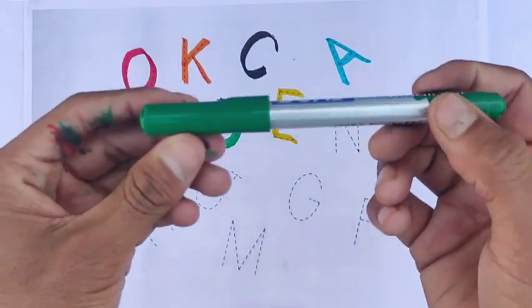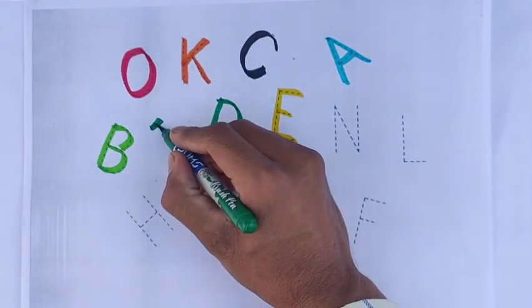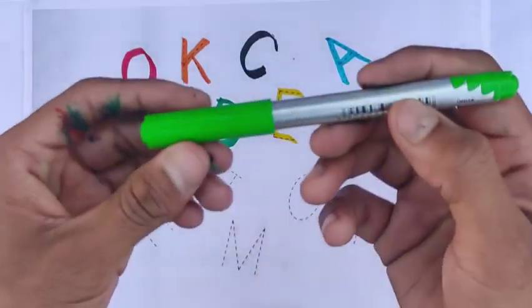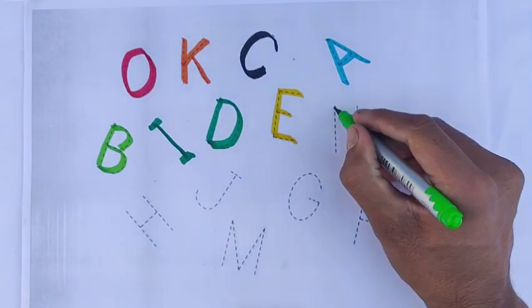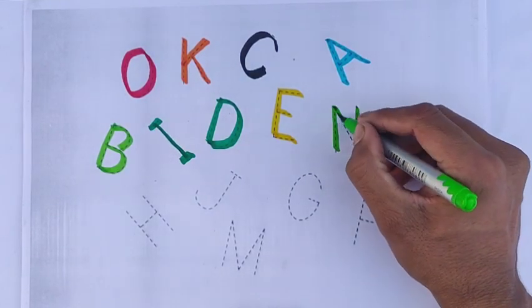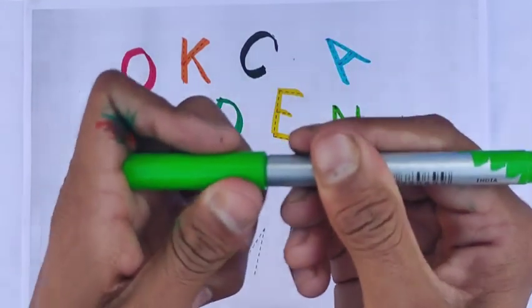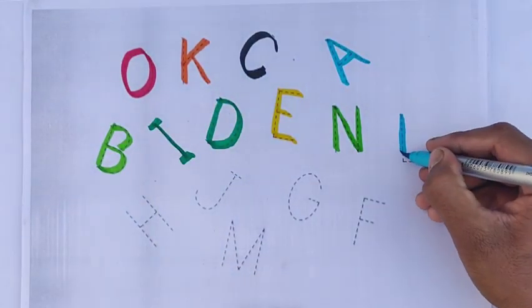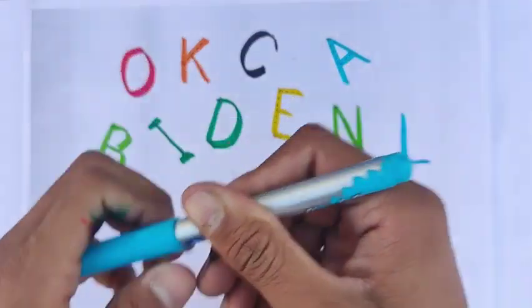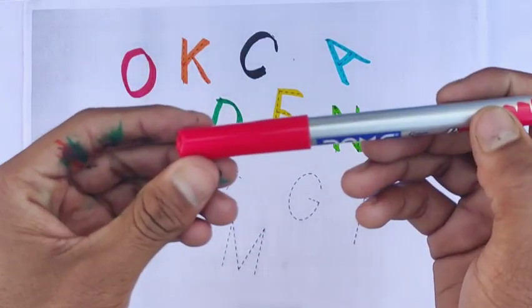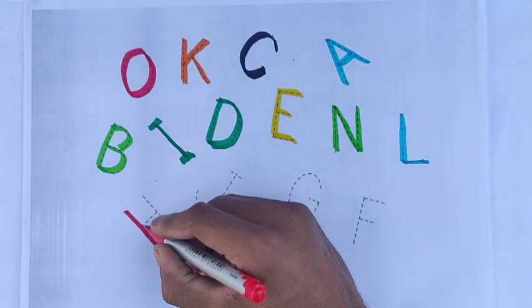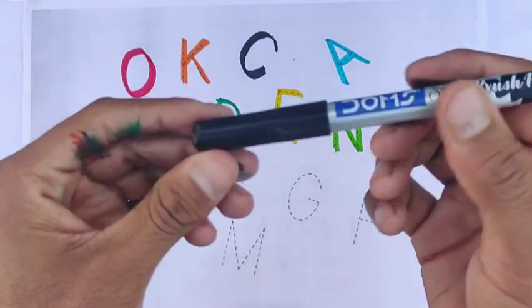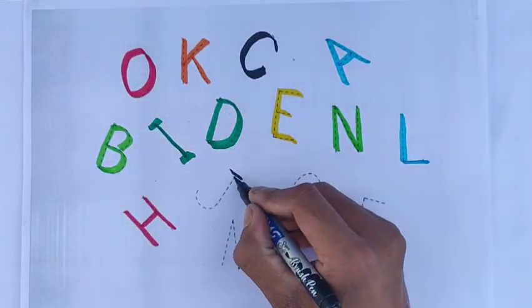I, ink — dark green color. N, nest — light green color. L — sky blue color. H, hand — red color. J, jug — black color.